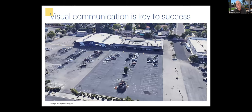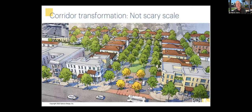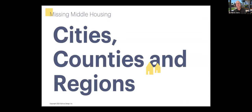One last tool that we feel is really successful is visual communication — in terms of how to build support for this broad range of housing choices. This isn't just about drawing pretty pictures, but actually taking specific opportunity sites and illustrating and demonstrating to community members and decision makers the quality and character of a place that can be delivered, utilizing a broad range of missing middle housing typologies, and also understanding the feasibilities of those.